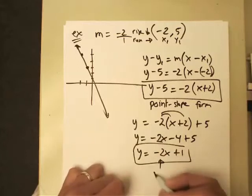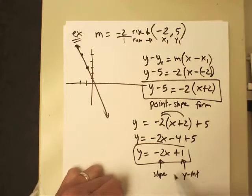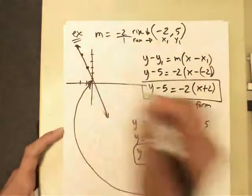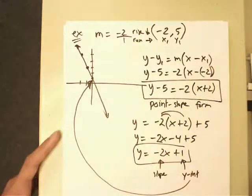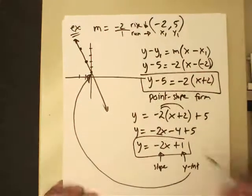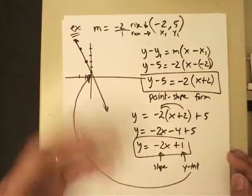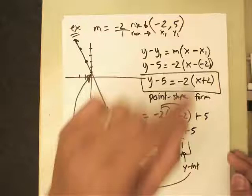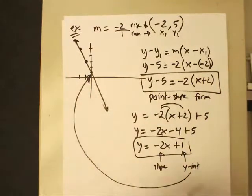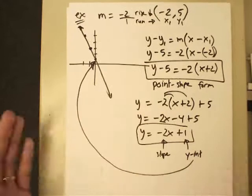y now equals negative 2x plus 1, and guess what? That is your slope, and this is your y-intercept. And this is not a surprise right there. Notice my graph. That's very accurate, isn't it? That it is indeed crossing over at 1 on the y-axis because that's your y-intercept. So as you can see, it is very useful. I can quickly get an equation by taking the slope and a point. Plug it into the point-slope form, solve for it, and then put it back into the slope-intercept if I ask you to.